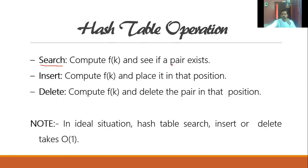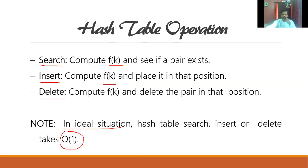The operations we can perform are: search, insert, delete, compute f(k) and check if a key-value pair exists. For a given value, compute f(k) and see whether that element exists. To insert, compute f(k) and place it at the corresponding position. To delete, compute f(k) and delete both the key and value from the hash table. In an ideal situation, all these take O(1) efficiency.